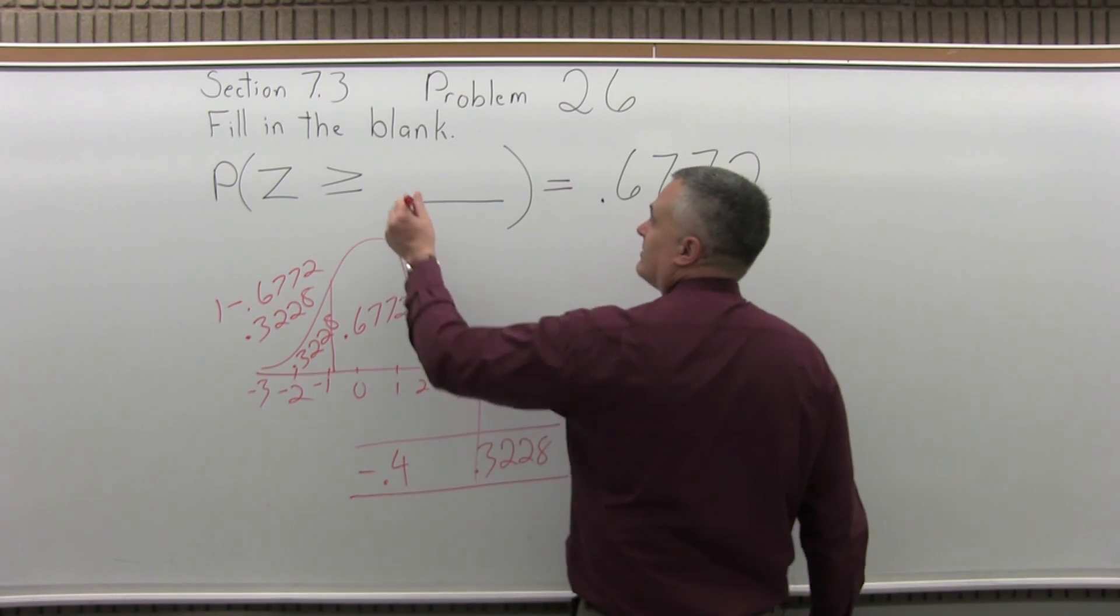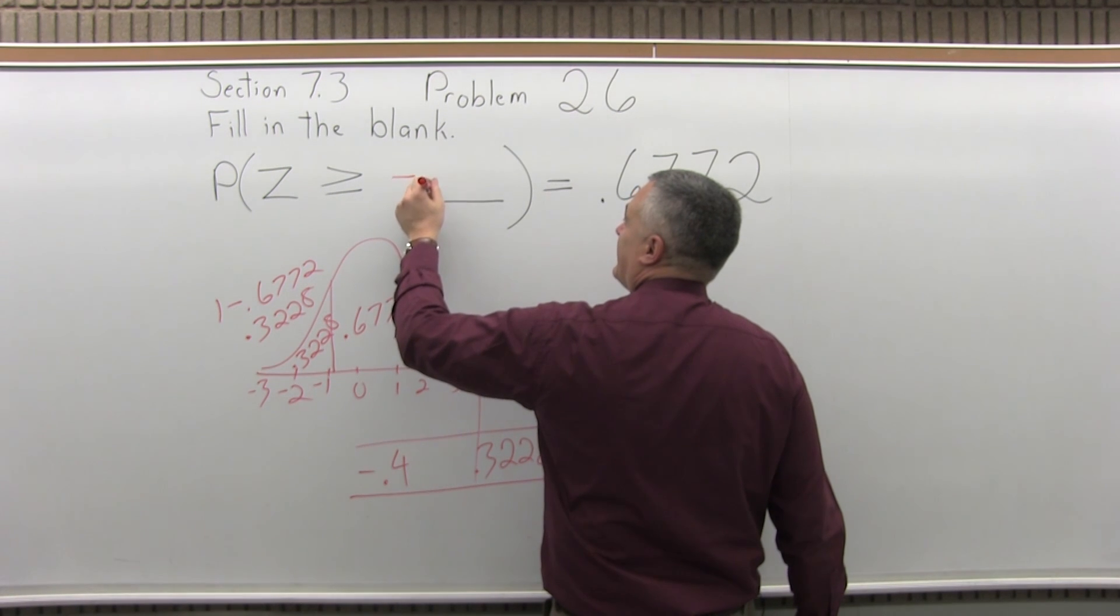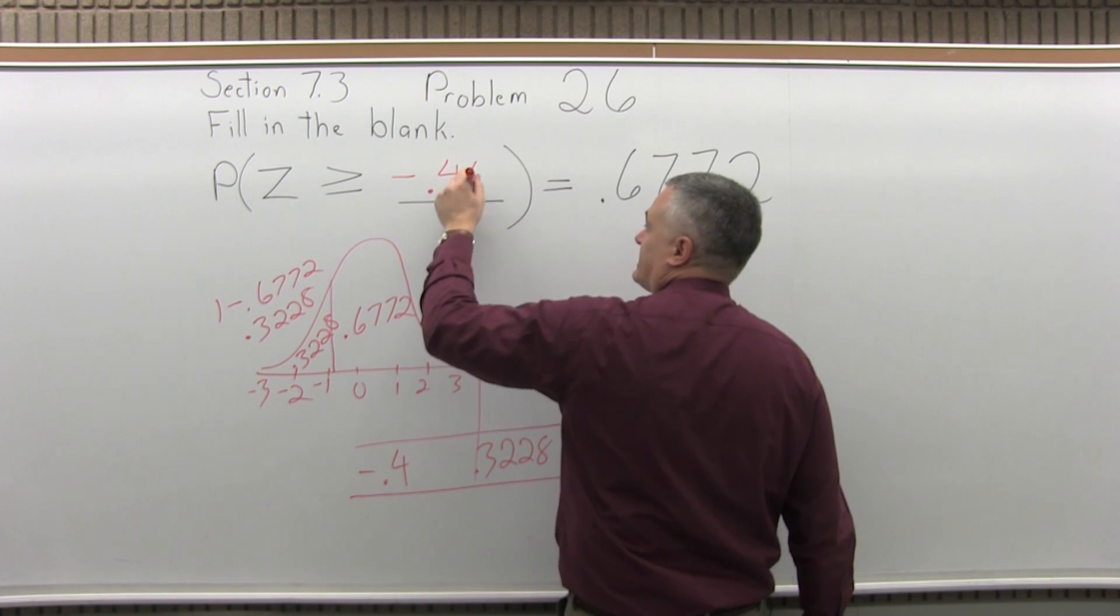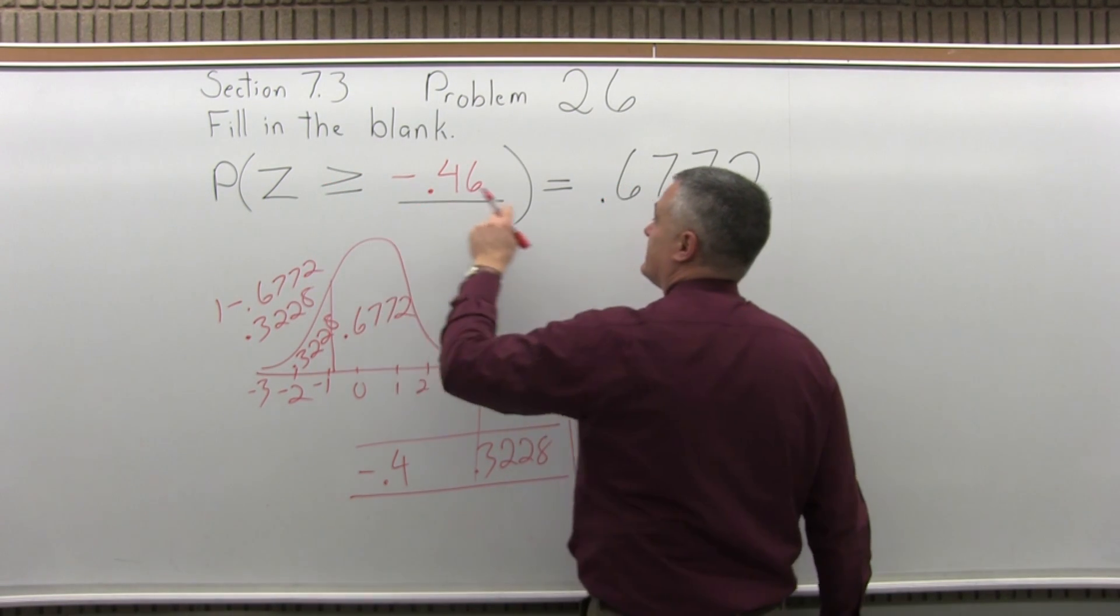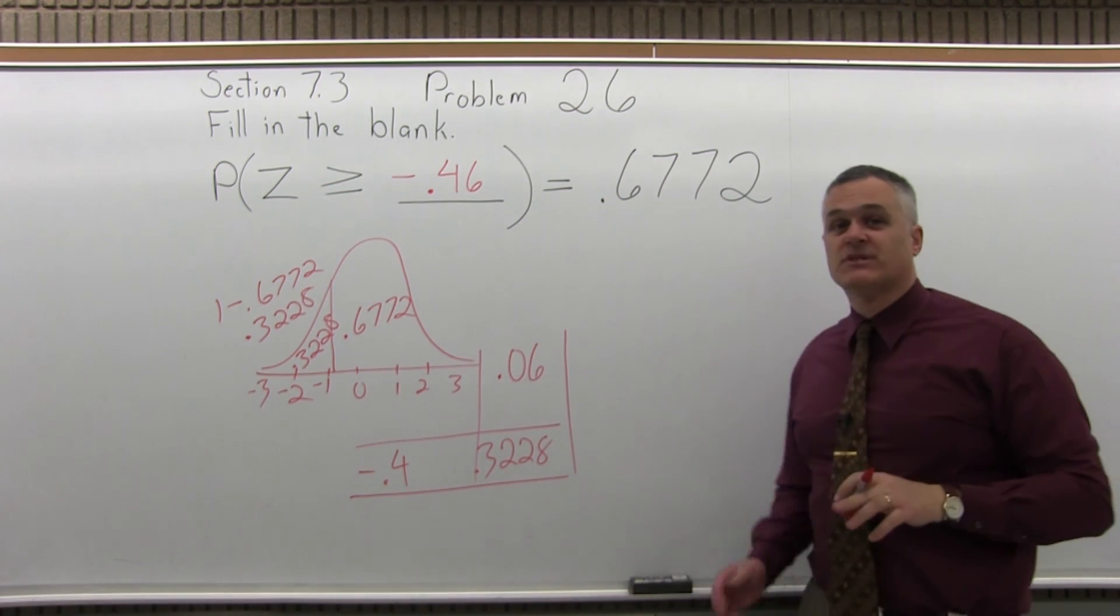So the blank part here must be negative 0.46. The answer is, the probability that Z is greater than or equal to negative 0.46 equals 0.6772.